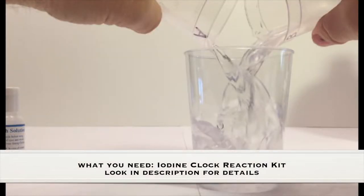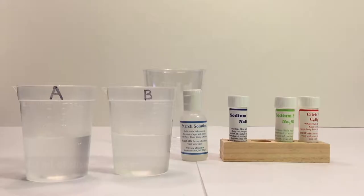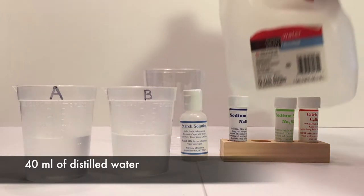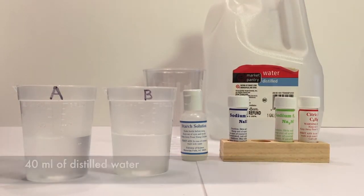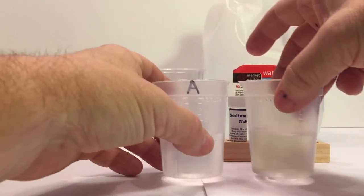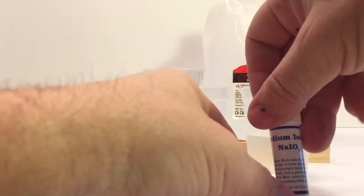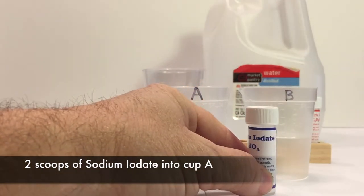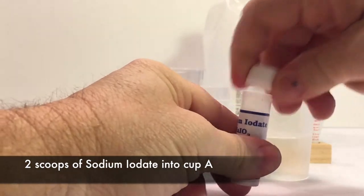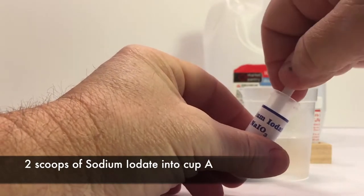What you need for this experiment is the iodine clock reaction kit. If you look in the description, I put a link where you can get that. So this is a really awesome experiment. You're going to add chemical solutions to two different cups, which I marked A and B. Both cups come with the kit. I've already poured 40 milliliters of distilled water in each cup.